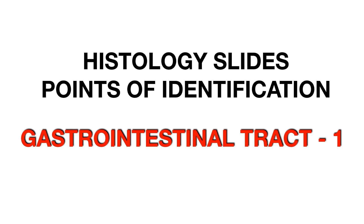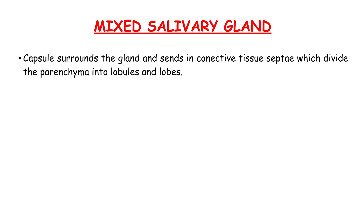Welcome friends, today we are going to discuss histology slides points of identification: gastrointestinal tract part 1. The mixed salivary gland capsule surrounds the gland and sends in connective tissue septa which divides the parenchyma into lobules and lobes.